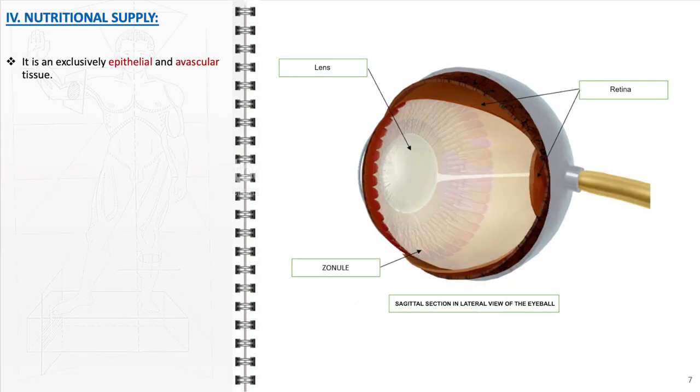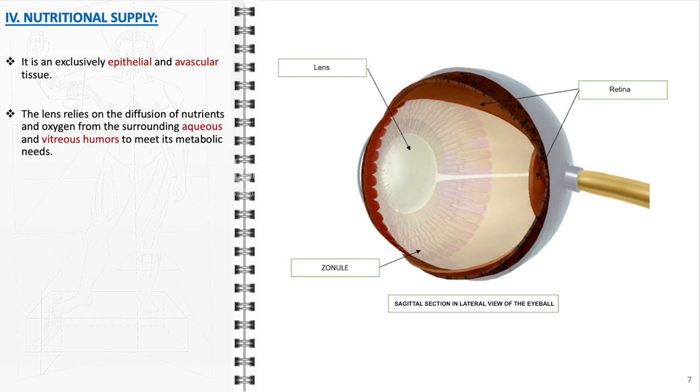The nutritional supply of the lens in the human eye is unique in that it is an exclusively epithelial and avascular structure. This means that it lacks blood vessels, which are typically crucial for supplying nutrients and oxygen in most tissues. Instead, the lens relies on the diffusion of nutrients and oxygen from the surrounding fluids: the aqueous humor in front of the lens and the vitreous humor behind it. These fluids play a critical role in meeting the metabolic needs of the lens.